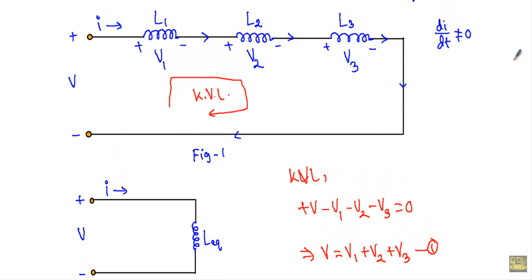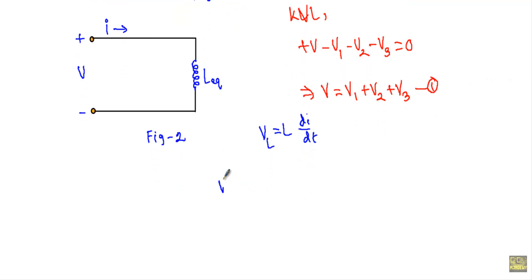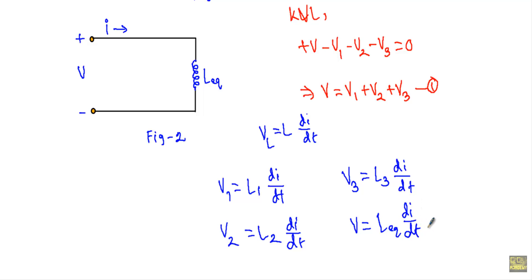We know that the voltage across an inductor is given by VL equals L times dI/dt. So V1 equals L1·dI/dt, V2 equals L2·dI/dt, and V3 equals L3·dI/dt. In figure 2, V is the voltage across L equivalent, so V equals L equivalent times dI/dt.